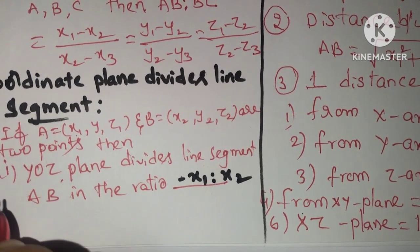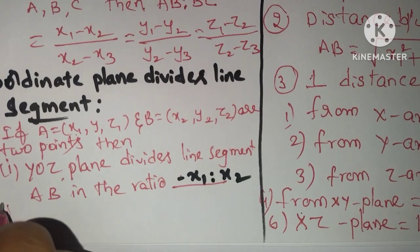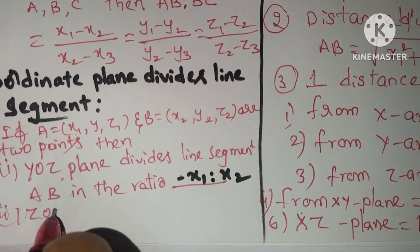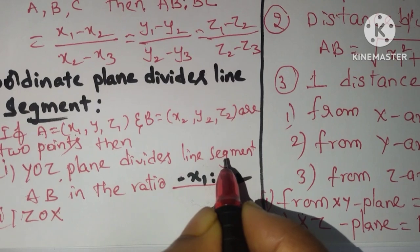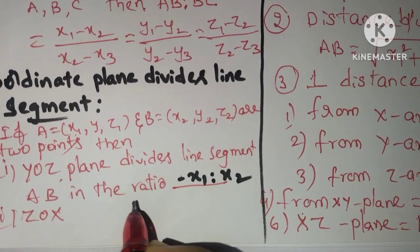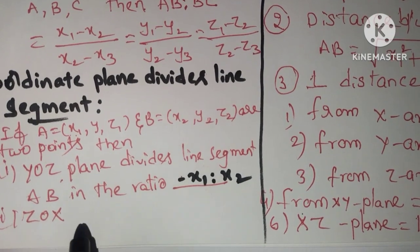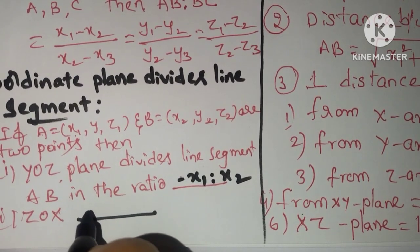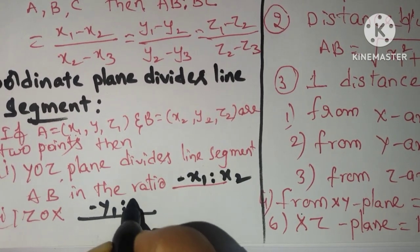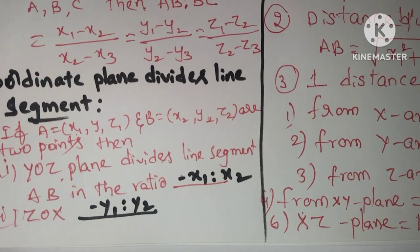Suppose they are asking ZOX plane. ZOX plane divides the line segment AB in the ratio. What is the missing one here? Y. So Y has Y1, Y2. So minus Y1 is to Y2.